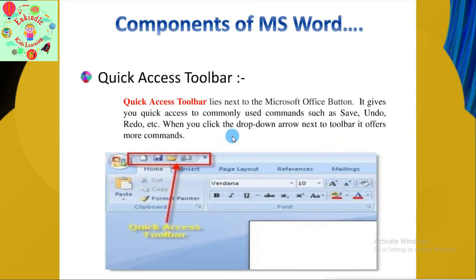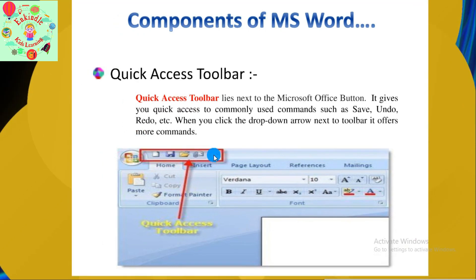Moving on to the next component: the Quick Access Toolbar. The Quick Access Toolbar lies next to the Microsoft Office Button. It gives you quick access to commonly used commands such as Save, Undo, and Redo. When you click the drop-down arrow next to the toolbar, it offers more commands.